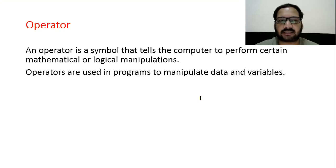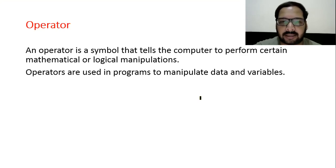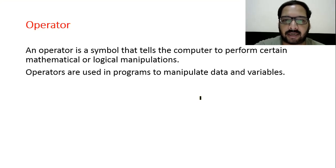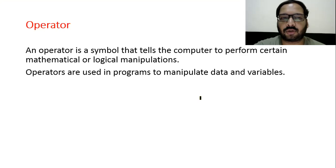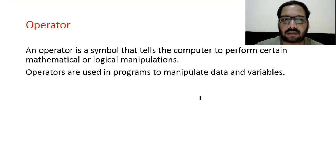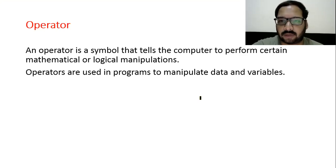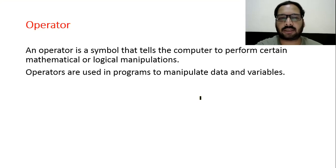Basically there are three types of operators: unary, binary, and ternary. Unary operators require one operand, binary operators require two operands, and ternary operators require three operands. Here operand means a variable or a constant.